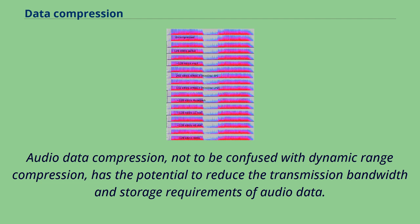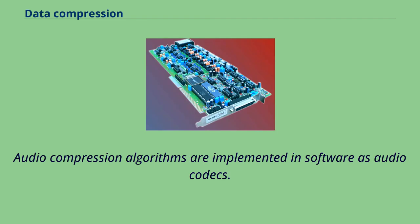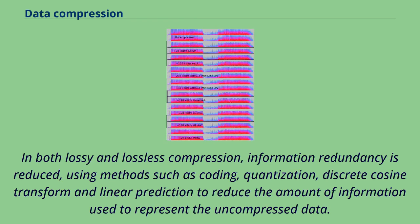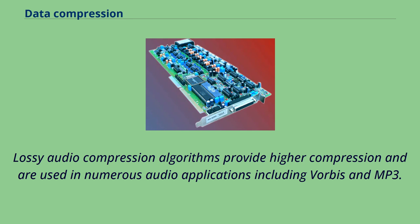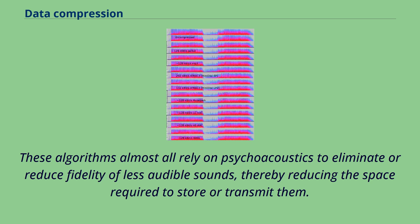Audio data compression — not to be confused with dynamic range compression — has the potential to reduce the transmission bandwidth and storage requirements of audio data. Audio compression algorithms are implemented in software as audio codecs. In both lossy and lossless compression, information redundancy is reduced using methods such as coding, quantization, discrete cosine transform, and linear prediction to reduce the amount of information used to represent the uncompressed data. Lossy audio compression algorithms provide higher compression and are used in numerous audio applications including Vorbis and MP3. These algorithms almost all rely on psychoacoustics to eliminate or reduce fidelity of less audible sounds, thereby reducing the space required to store or transmit them.